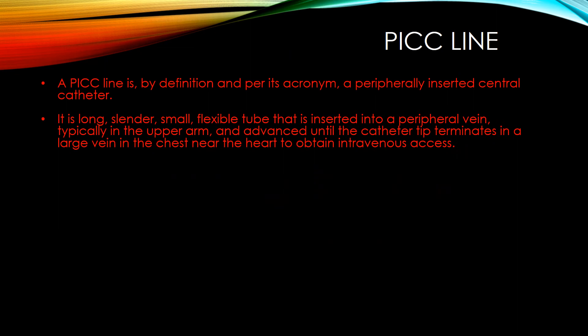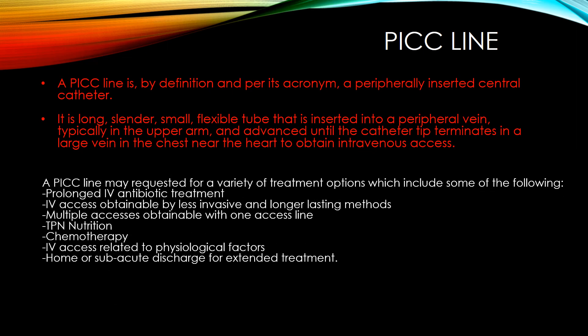A PICC line — Peripherally Inserted Central Catheter — is a long, slender, small, flexible tube inserted into a peripheral vein, typically in the upper arm, and advanced until the catheter terminates in a large vein in the chest near the heart to obtain intravenous access. A PICC line may be requested for prolonged IV antibiotic treatment, IV access obtained by less invasive and longer-lasting methods, multiple access with one or more lines, TPN nutrition, chemotherapy, IV access related to physical factors, and home or subacute discharge for extended treatment.